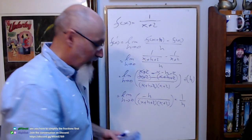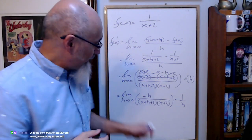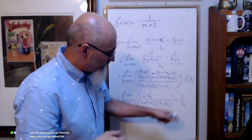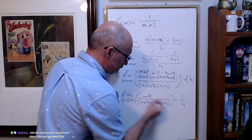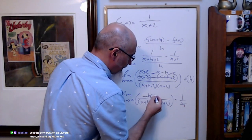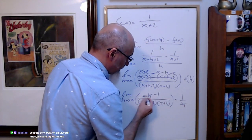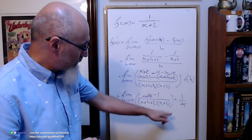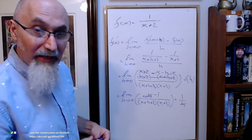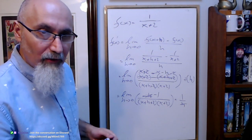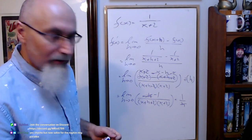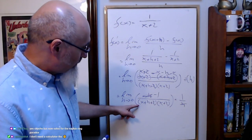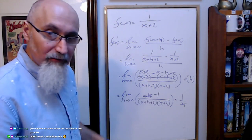So we've got negative h over that expression times one over h — h cancels h — so we've got negative one on top. We got rid of an h.